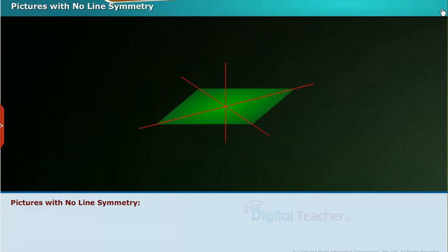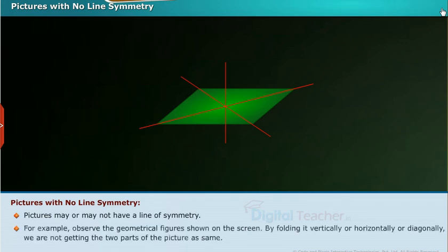Now let us see pictures with no line of symmetry. Pictures may or may not have a line of symmetry. Observe the geometrical figures shown on the screen.